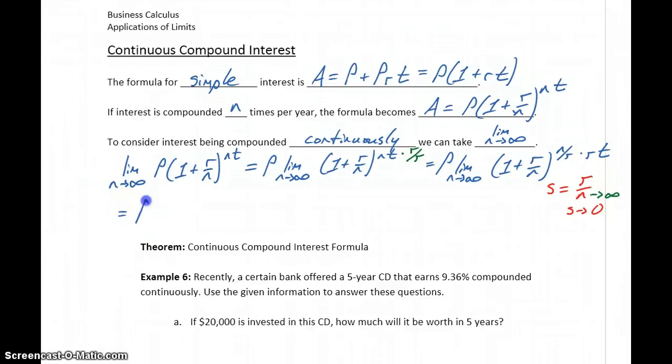So we can update our problem to be P times the limit as S approaches 0 of the quantity 1 plus S to the 1 over S. All of that raised to the Rt power.